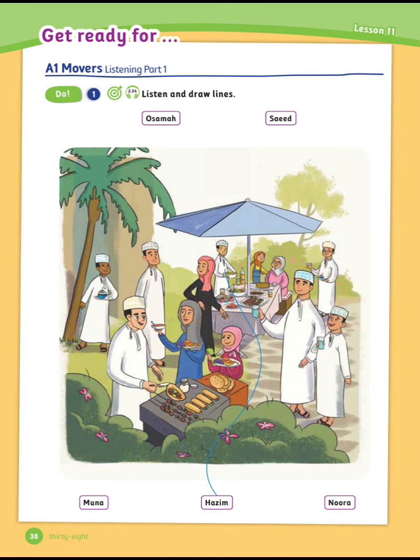Number 3: I know that boy. There is a cupcake on his plate. Do you mean the boy with the glass of orange juice? Yes. His name is Saeed, isn't it? Yes, Uncle Ahmed. I play football with Saeed every Saturday. Yes, I remember.